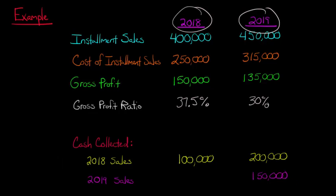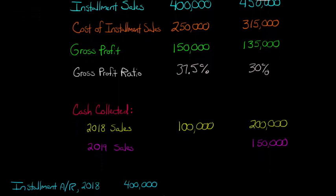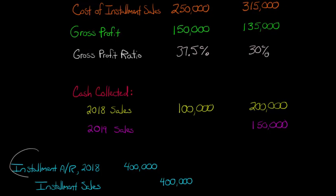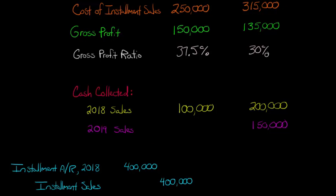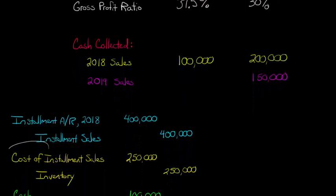Now let's make journal entries for 2018. We have installment sales of $400,000, so we debit installment accounts receivable 2018 and credit installment sales for $400,000. Then for cost of installment sales of $250,000, we debit cost of sales for $250,000 and credit inventory. We also collected cash of $100,000, so we debit cash and credit installment accounts receivable 2018 for $100,000.